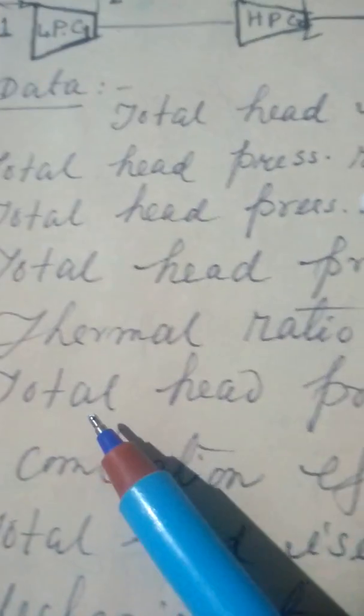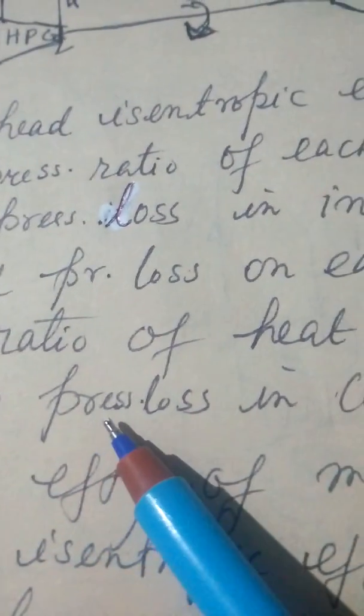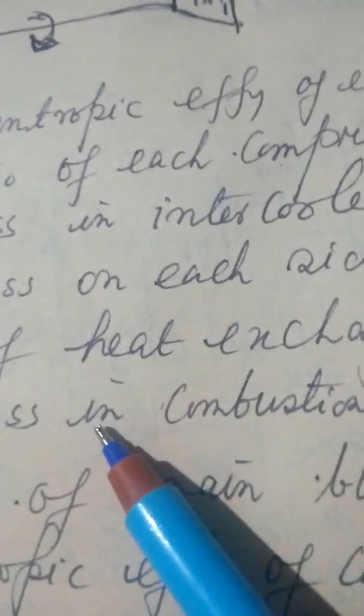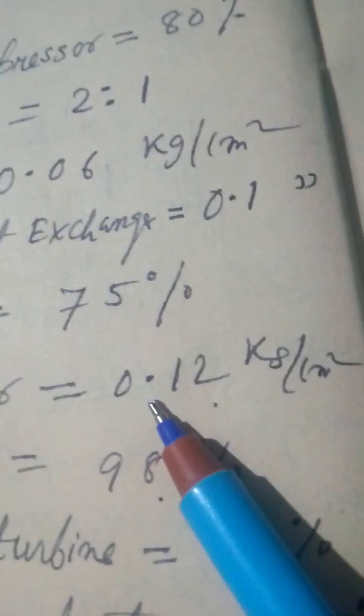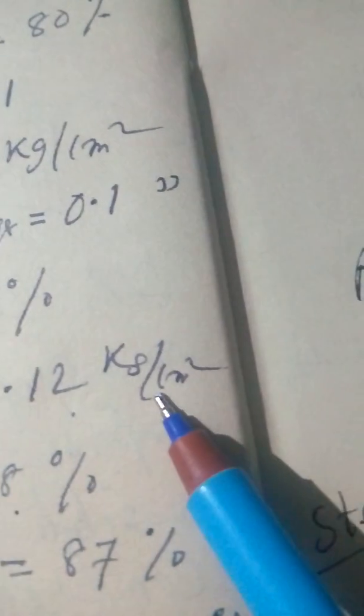Total head pressure loss in combustion chamber is equal to 0.12 kg per centimeter square.